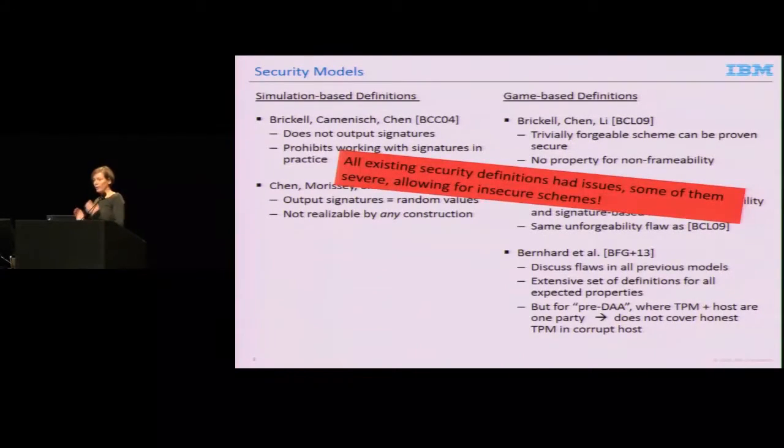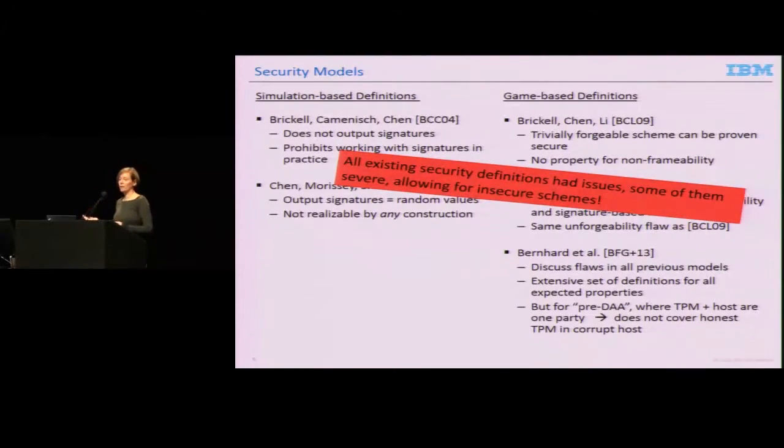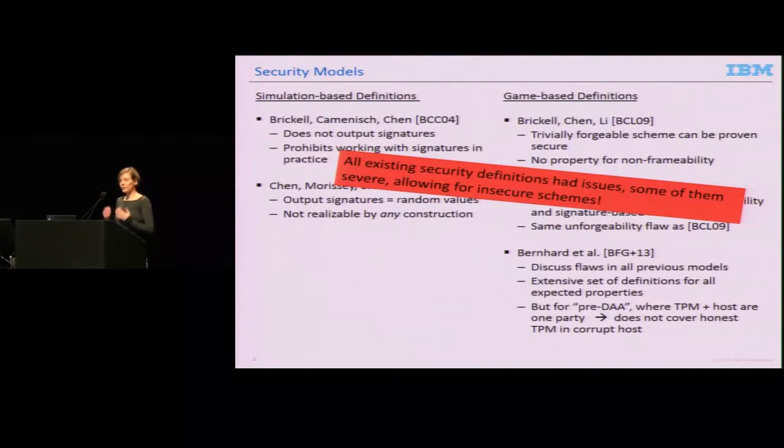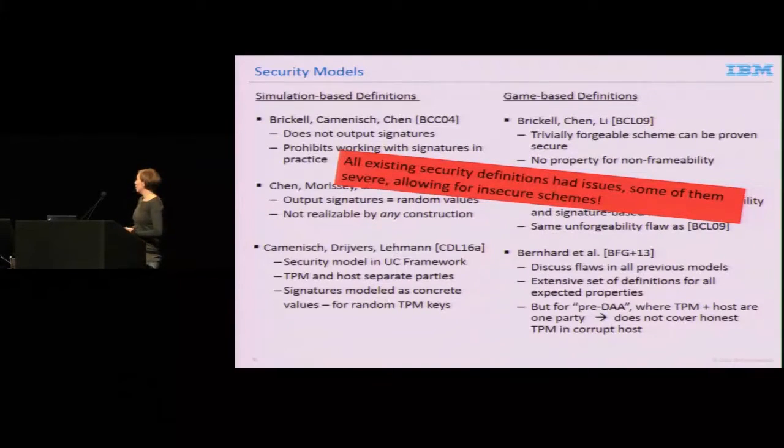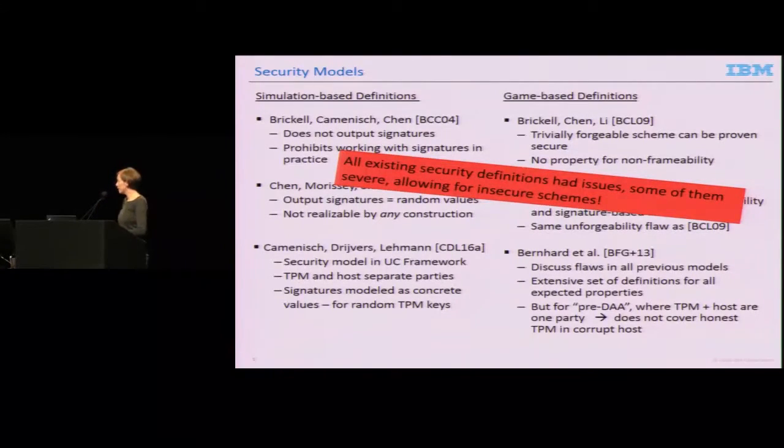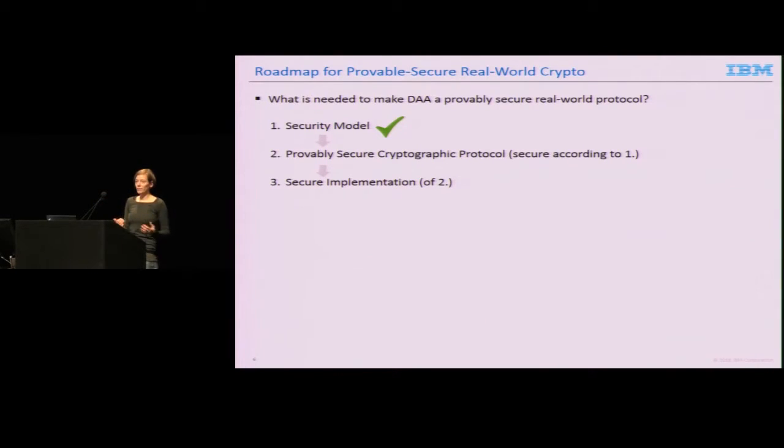Despite DAA being there for 12 years, 500 million chips sold, and quite a line of work on formal security, there was not a single security definition that was achievable and defined the security properties we wanted. We gave it a shot and hopefully got it correct this time. We went for a security model in the UC framework. We modeled TPM and host as separate parties. Given that we're in the ideal world, we had to output signatures as concrete values to make it usable in practice. We did it by creating signatures for random keys, because then you can prove it doesn't get any information about the identity. We have a security model now.